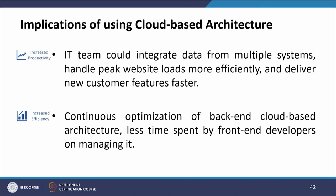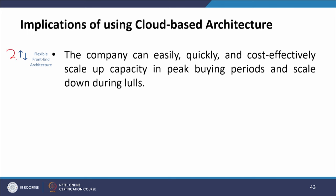The implications of LL Bean's cloud-based architecture: first, increased productivity — IT systems could integrate data from multiple systems, handle peak website loads more efficiently, and deliver new customer features faster. Second, increased efficiency — continuous optimization of back-end cloud-based architecture with less time spent by front-end developers on managing it. Third, flexible front-end architecture — the company can easily, quickly and cost-effectively scale up capacity during peak buying periods and scale down during lulls.